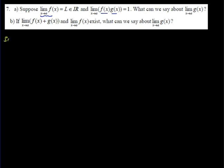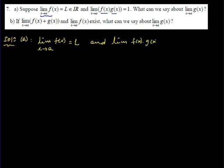We need to be very careful to answer this kind of problem. What is given? The limit of F of X as X approaches A is given, which is L, and the limit of the product of the two functions F and G as X approaches A is given as 1.